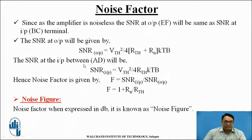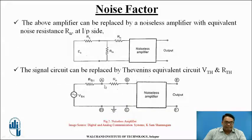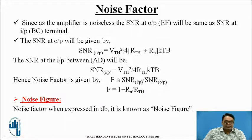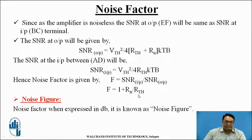The SNR at the output is given by SNR_out = Vth² / [(4Rth + Rn) × KTB]. The SNR at the input between points A and D is given by SNR_in = Vth² / (4Rth × KTB). Applying the noise factor equation F = SNR_in / SNR_out and substituting both expressions, the final equation is F = 1 + Rn/Rth.